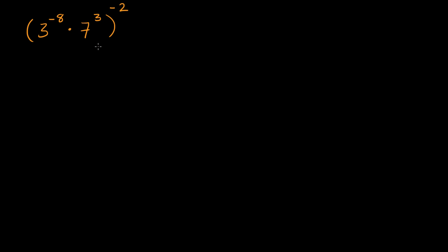I want you to pause this video and see if you could simplify this on your own. The key realization here — there are a couple of ways that you can tackle it — is if you have the product of two things and then you're raising that to some type of an exponent, that is going to be the same thing as raising each of these things to that exponent and then taking the product.